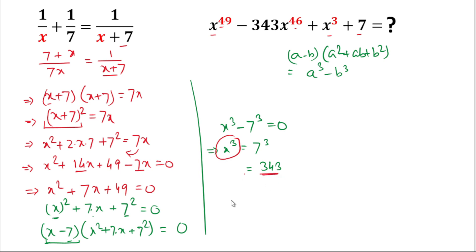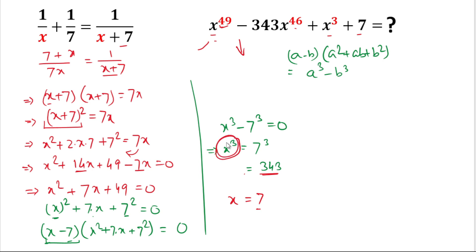We can also see that x = 7. However, if we directly put x = 7 and calculate x raised to the power 49, it will take a very long time. So instead, we'll substitute the value of x³ = 343.